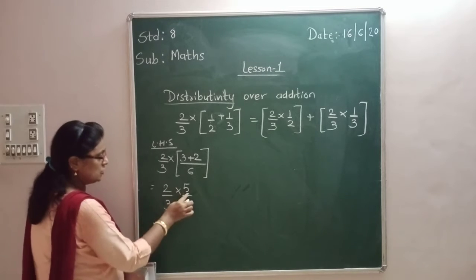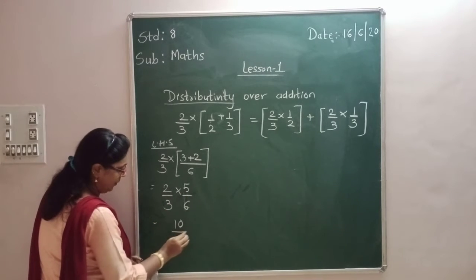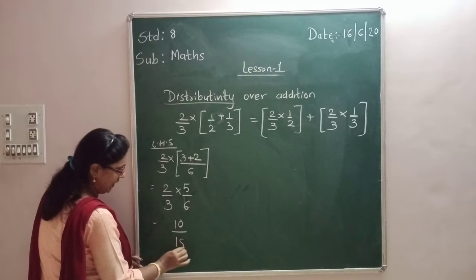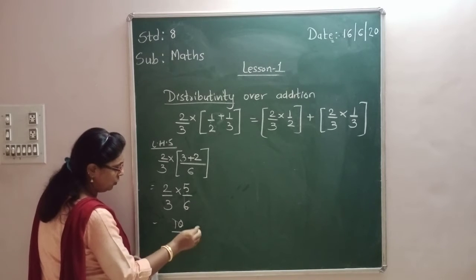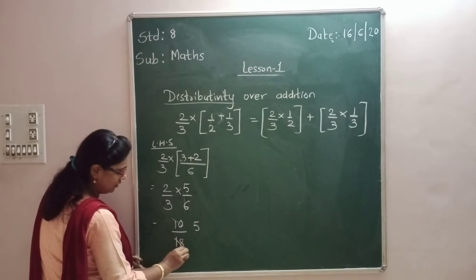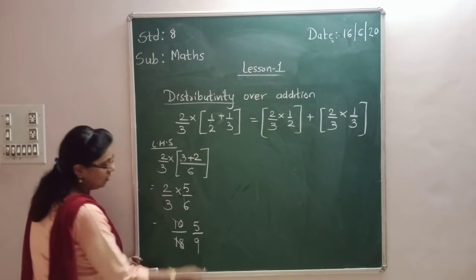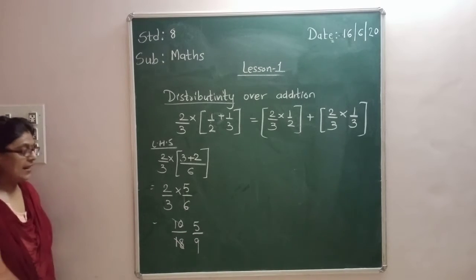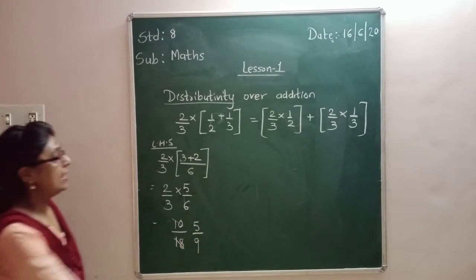So what will be the answer? 2 times 5 is 10, and 3 times 6 is 18. So we got the answer as 10/18, which simplifies to 5/9.